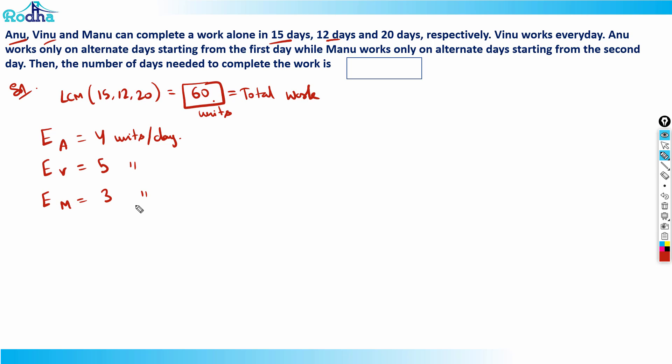So what happened? Vinu works every day, Anu works on only alternate days starting from the first day, and Manu works on alternate days starting from the second day. So let's find the pattern here. On first day, Vinu has worked, and Anu is starting from the first day, so Vinu and Anu have worked.